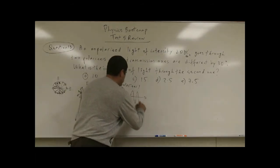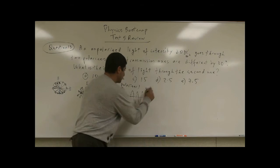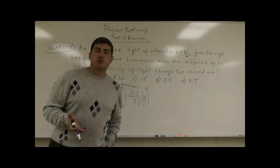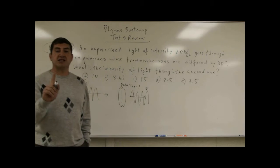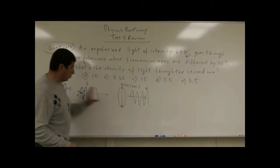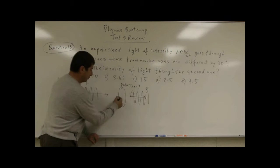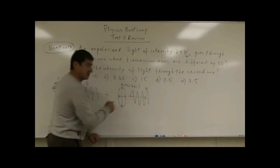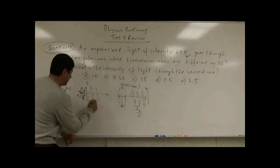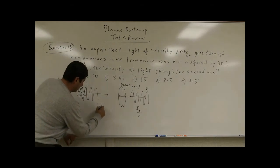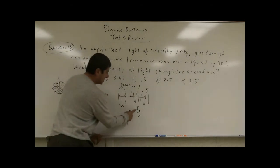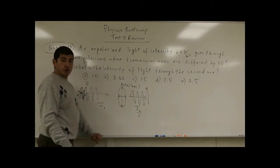Therefore, the first polarizer reduces the intensity of the light wave because only up and down electric fields go through. From the theory, only half the intensity gets through — only the vertical component gets through, and the intensity is cut in half. So if the intensity of the incoming wave is I₀, the intensity after the first polarizer is I₀ over 2.